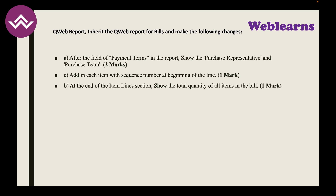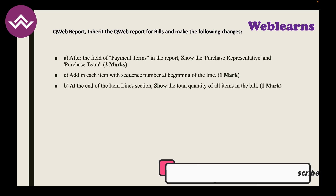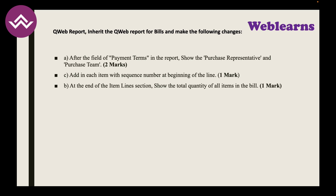Task I: Customize the existing QWeb purchase report. Add the payment terms field, the purchase representative, and the purchase team to the report — that's two marks. Also add a sequence number at the beginning of each item line, so purchase order lines are numbered 1, 2, 3, and so on. At the end of the item line section, show the total quantity of all items. Once done, one more mark.